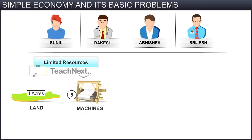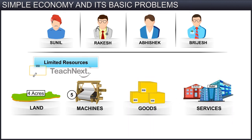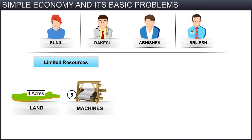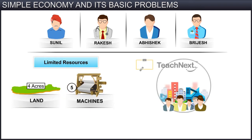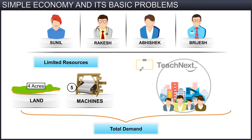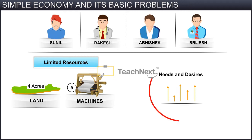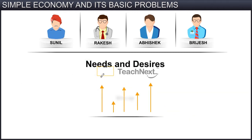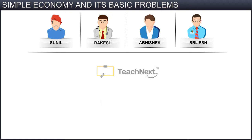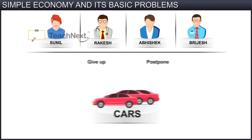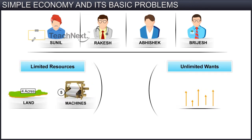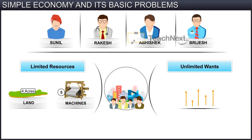Now, they realise that they had limited resources with which to produce goods and services. Just as the resources of individuals are limited, similarly, the resources of society are also limited in comparison with the total demand of society. Since our needs and desires are unlimited, it is not possible to satisfy them all with limited resources. Therefore, we have to give up or postpone some of these wants. In this case, the four friends decided to give up or postpone their idea of purchasing cars. The problem of limited resources and unlimited wants is faced by all individuals. Therefore, society has to utilise the limited resources in the best possible way to satisfy the unlimited wants of all the people.